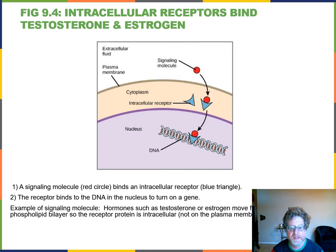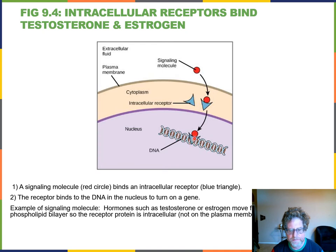Receptors aren't always bound to the plasma membrane. Lipid-soluble molecules like testosterone or estrogen can go right through the phospholipid bilayer. An intracellular receptor binds the testosterone or estrogen, they can move across the nuclear membrane, and that receptor-ligand complex binds to the DNA to turn on genes.